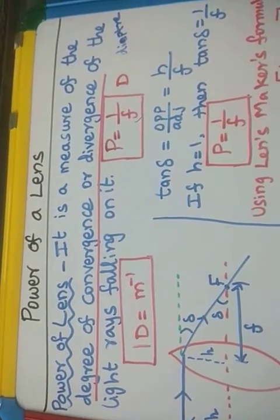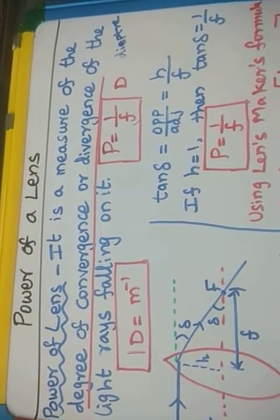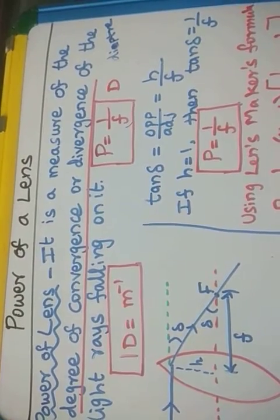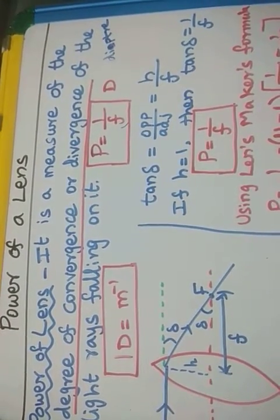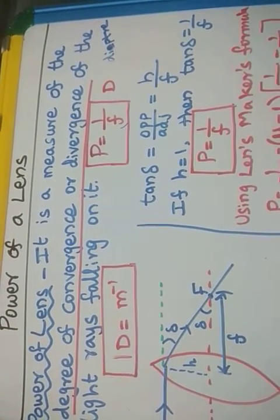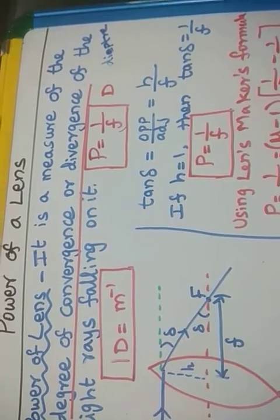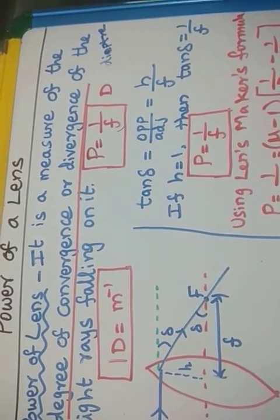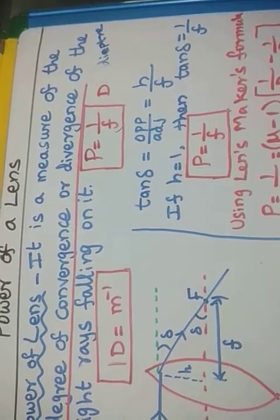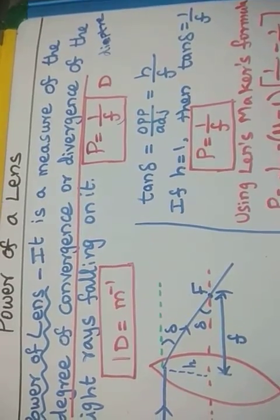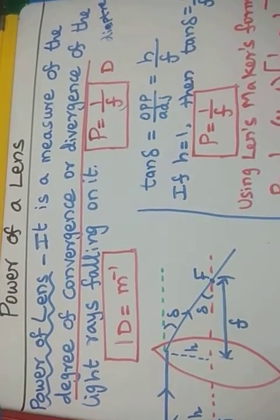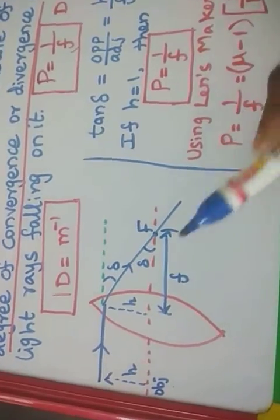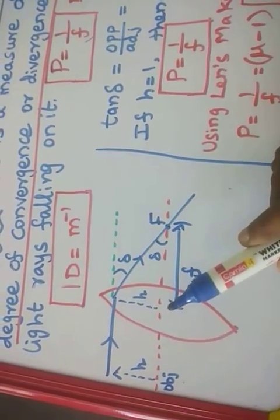In another way, we can define the power of a lens as the tangent of the angle by which it converges or diverges a beam of light falling at a unit distance from the optical center. By using this definition, we are now going to derive the formula.